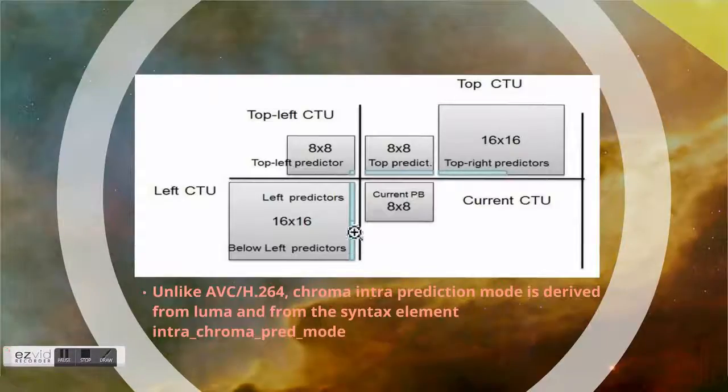And we need to take the below left predictor. Hey, it wasn't like this in H.264. Therefore, it introduced some padding if this pixel is unavailable. And it introduced as well some smooth filtering, which is mostly for the 32 by 32 TU blocks. And as I said already, the dependency of the chroma from luma.